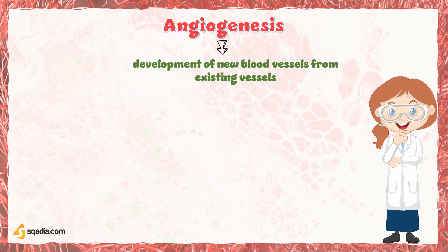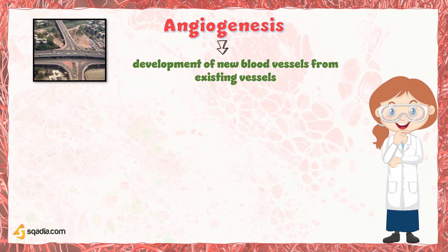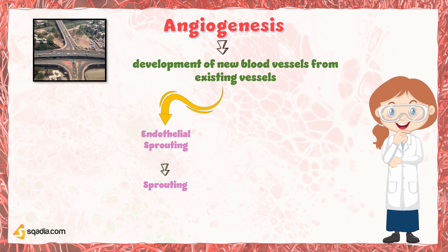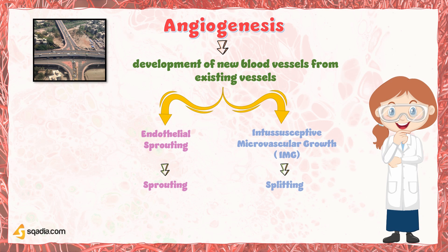Angiogenesis is the development of new blood vessels from existing vessels. As I mentioned in the intro, angiogenesis is comparable to the creation of new connecting routes from existing highways. Angiogenesis does not have a single mechanism like vasculogenesis. Rather, it comprises two different mechanisms: endothelial sprouting — the sprouting of endothelial cells — and intussusceptive microvascular growth, or IMG for short, which involves the splitting of vessel lumens.